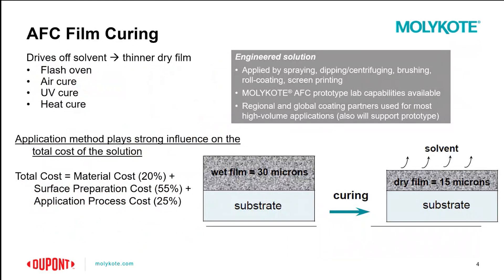Let's focus a little bit more on AFC film curing. There are different methods of curing: air cure, UV cure, heat cure, and flash ovens. The application method plays a strong influence on the total cost of the solution. The actual material cost only makes up roughly 20% of the total cost of using an AFC. Surface preparation is very critical — about 55% of the cost goes into this. The actual application cost is about 25%. This is why we always recommend that when utilizing an AFC, especially a heat-cured product, you work with a coater who specializes in applying Moly Coat.